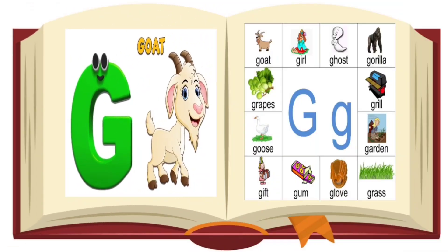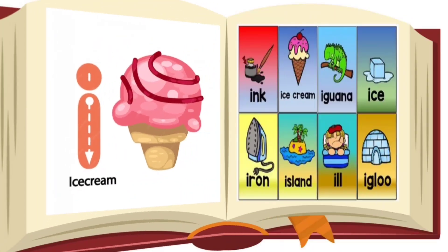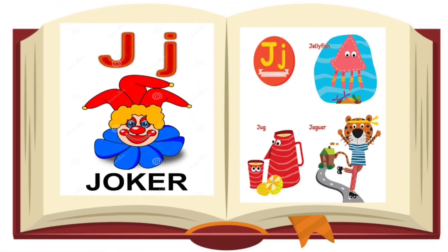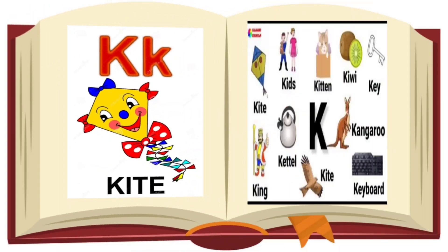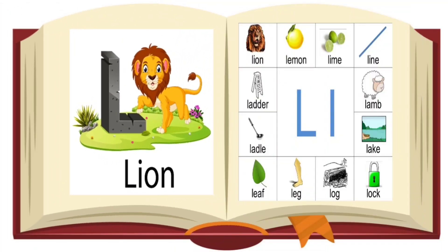F for fish. G for goat, G for globe. H for hen, H for horse, H for home. I for ice cream. J for ink, J for joker, J for jug. K for kite, K for kangaroo. L for lion.